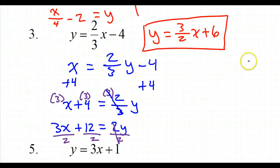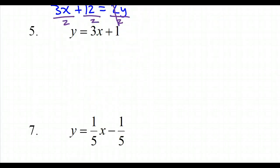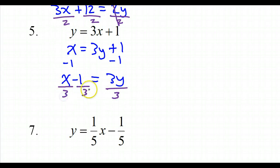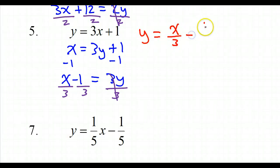Example 5: switch the x and the y, giving x equals 3y plus 1. Subtract 1 from both sides: x minus 1 equals 3y. Divide everything by 3, and the final answer is y equals x over 3 minus 1/3. I could have also written this as 1/3 x — that would mean the same thing.